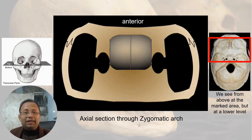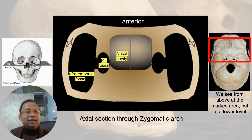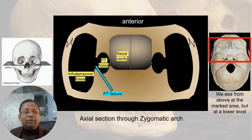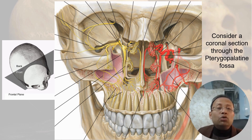To understand the boundaries better, let us see a schematic diagram of an axial section through the zygomatic arch, viewed from above at the level of the zygomatic arch. The sphenopalatine fossa lies between the nasal cavity and the infratemporal fossa. Through the pterygopalatine fissure, the pterygopalatine fossa is accessible from the lateral side. A coronal section through the pterygopalatine fossa will look like this.